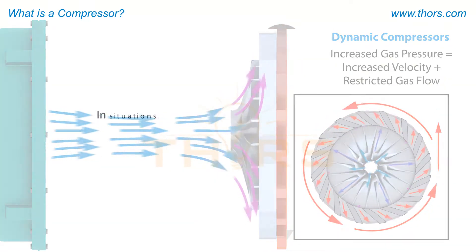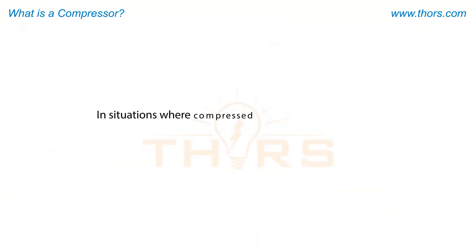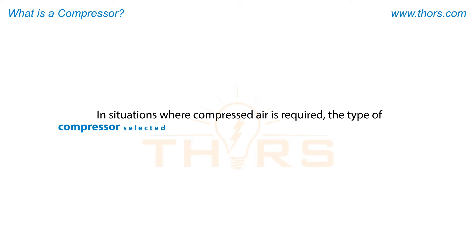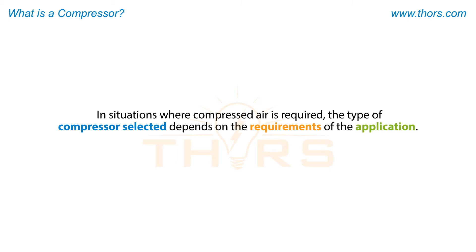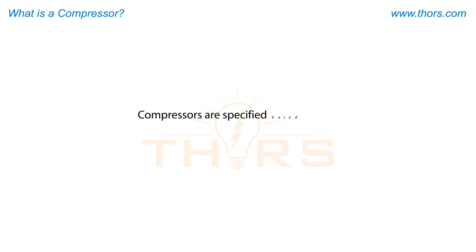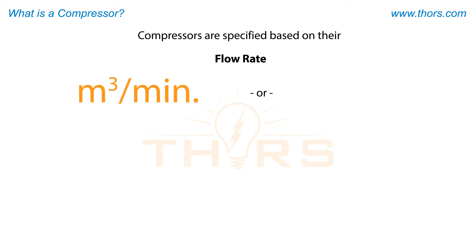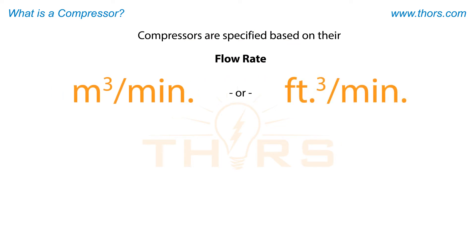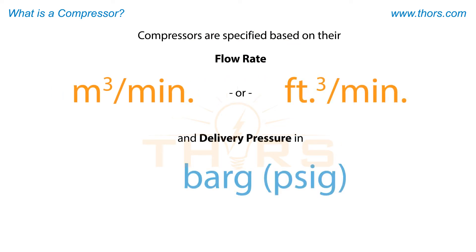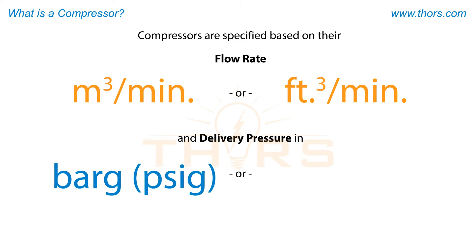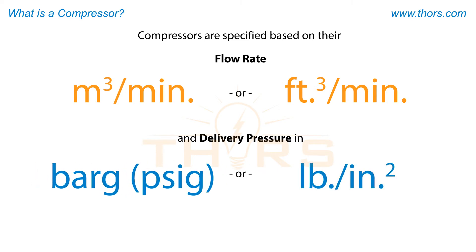In situations where compressed air is required, the type of compressor selected depends on the requirements of the application. Compressors are specified based on their flow rate in cubic meters per minute or cubic feet per minute, and delivery pressure in bar gauge or pounds per square inch gauge.